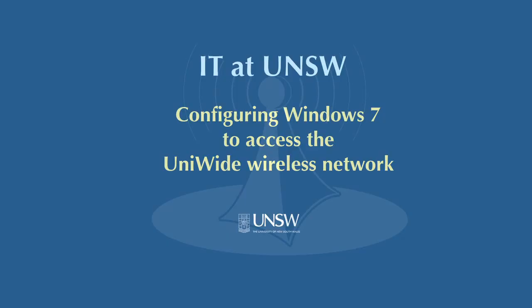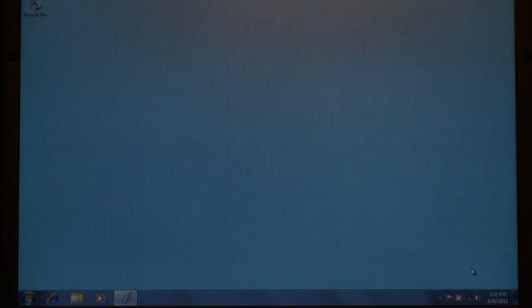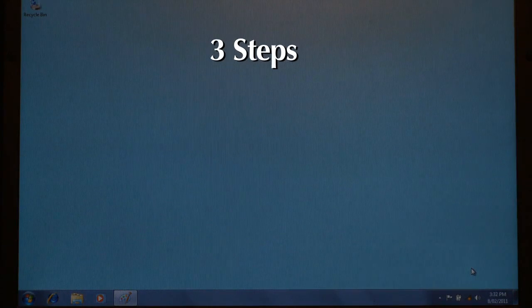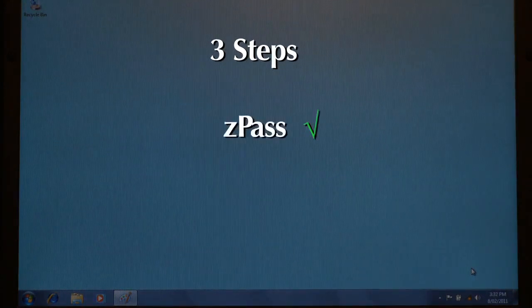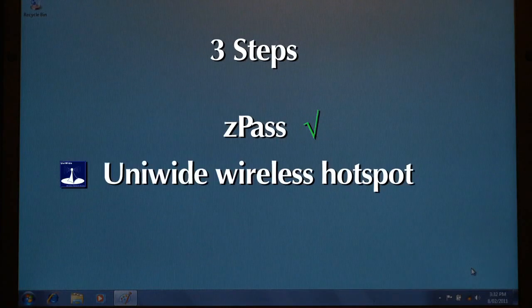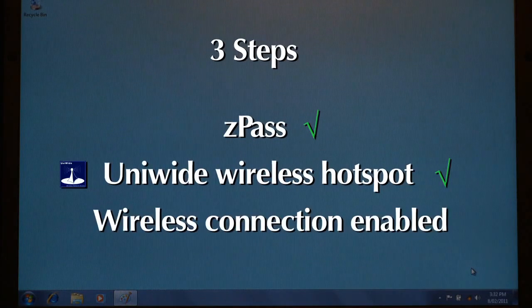The following is a step-by-step guide on how to configure Windows 7 for the UNSW UniWide Wireless Network. These are some steps to consider before following our UniWide configuration instructions. You need to have a Z pass, be in a UniWide wireless hotspot, and the wireless connection on your laptop needs to be enabled.